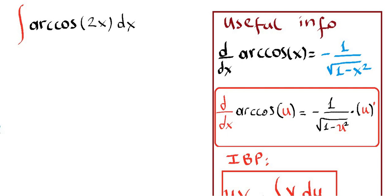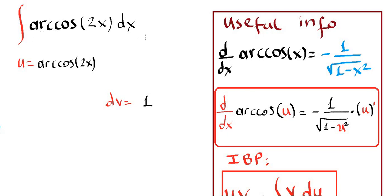For this we're going to decide what our u and dv are. Let our u be cosine of 2x, and let dv be one, because we can rewrite cosine of 2x dx as one times cosine of 2x. So one function will be one and the other will be cosine of 2x.